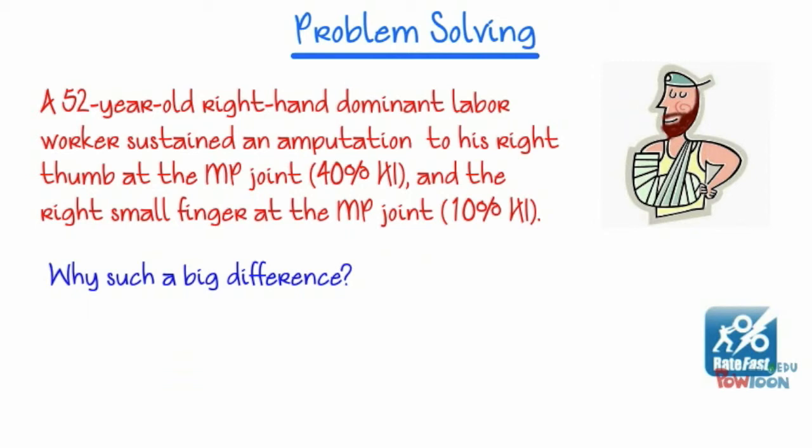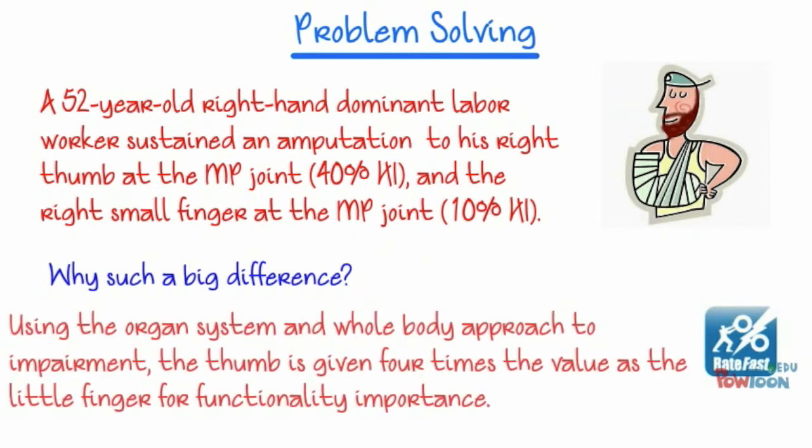Why such a big difference? Using the organ system and whole-body approach to impairment, the thumb is given four times the value as the little finger for functional importance.